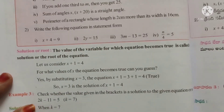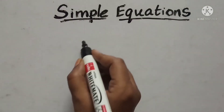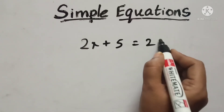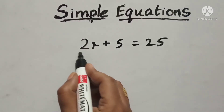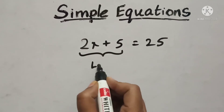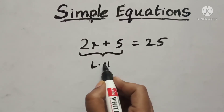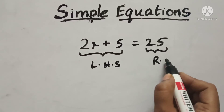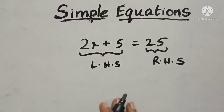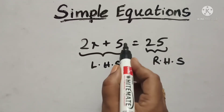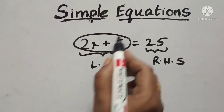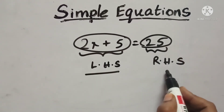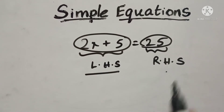In the equation 2x plus 5 is equal to 25: the part on the left side of the equal sign is called the Left Hand Side (LHS), and the part on the right side is called the Right Hand Side (RHS).